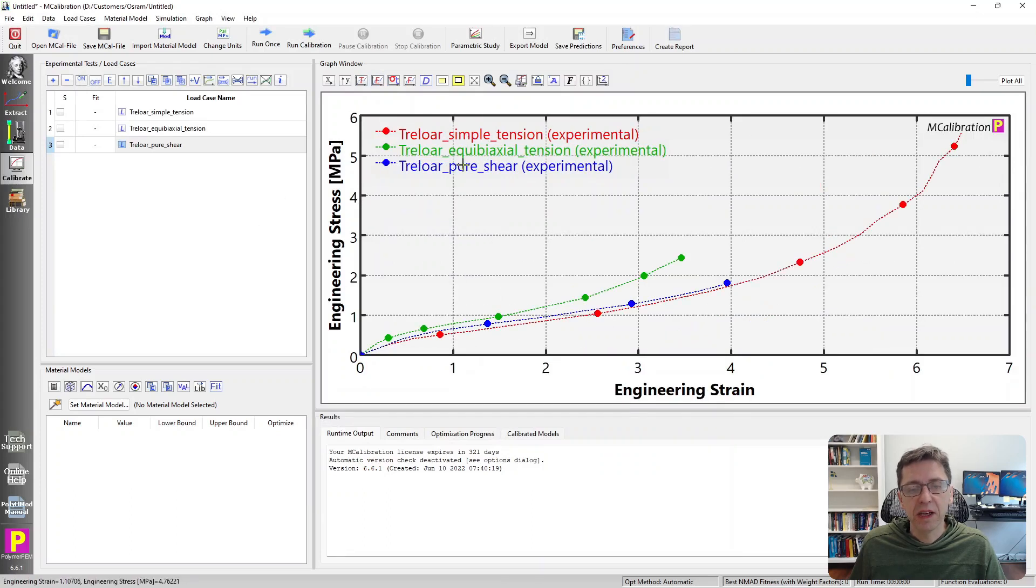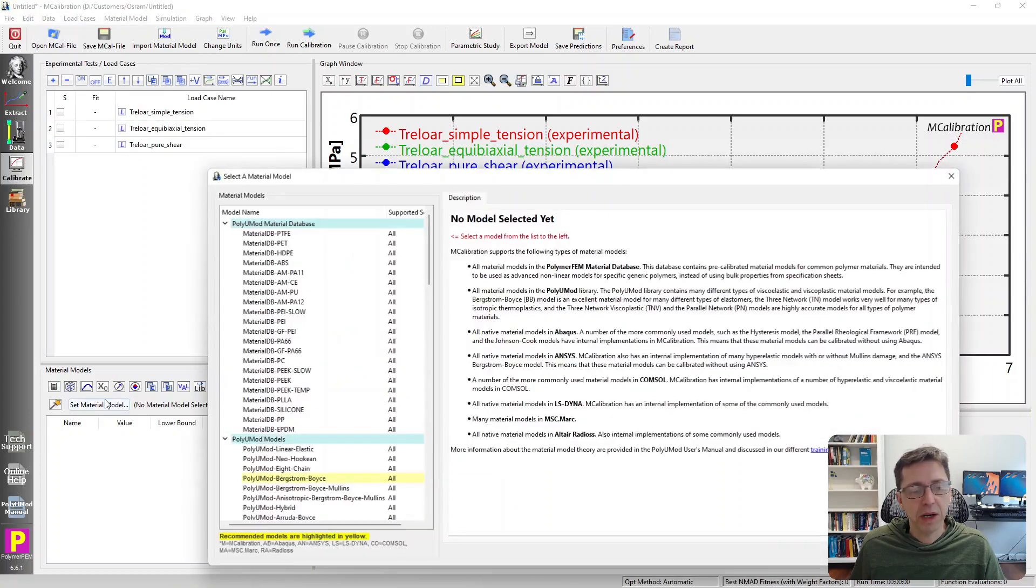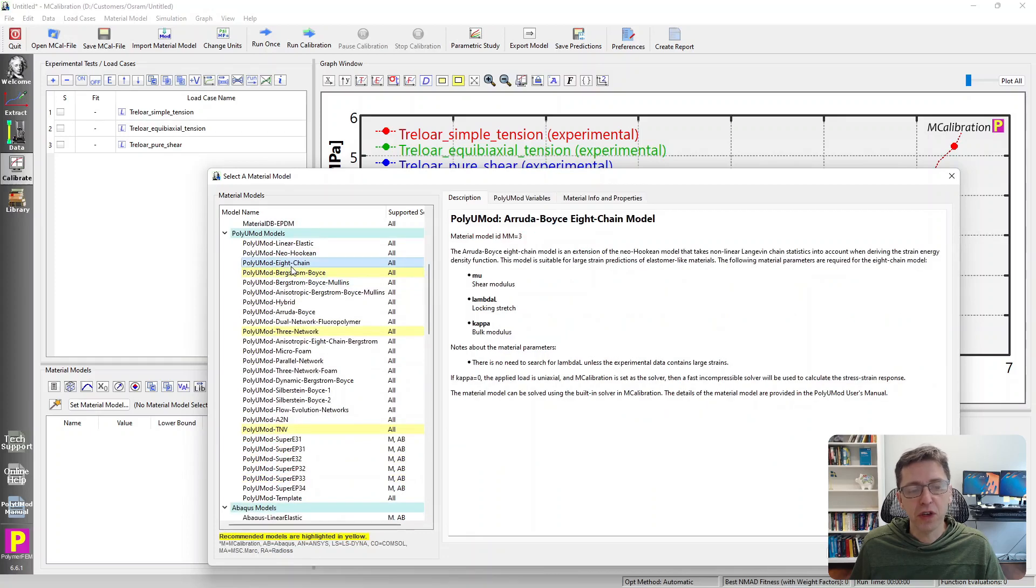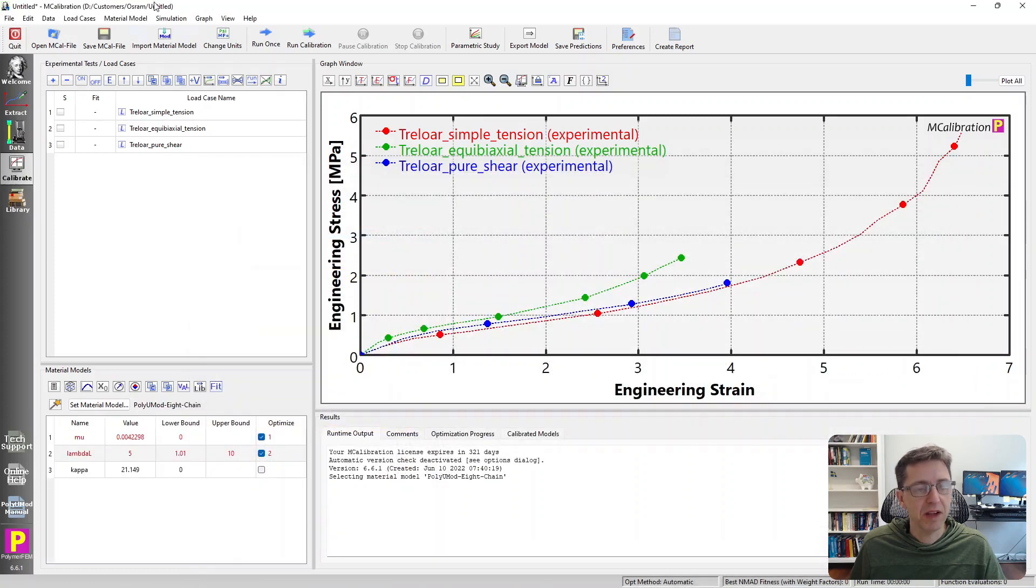It has uniaxial tension, biaxial tension, and pure shear. And I'm going to select Arruda-Boyce hyperelastic model now. And I'm just going to use the PolyUMod version of it. All finite element models, as I mentioned, have this implemented. I select this, and then I can just run it.